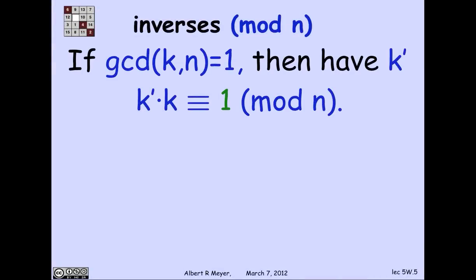So the proof of that is based on the following idea. Let's say that a number k prime is an inverse of k mod n if k prime times k is congruent to 1 mod n. So k prime is like 1 over k with respect to mod n. But of course, 1 over k is going to be a fraction unless k is 1. And so k prime is going to be an integer that simply acts like 1 over k.